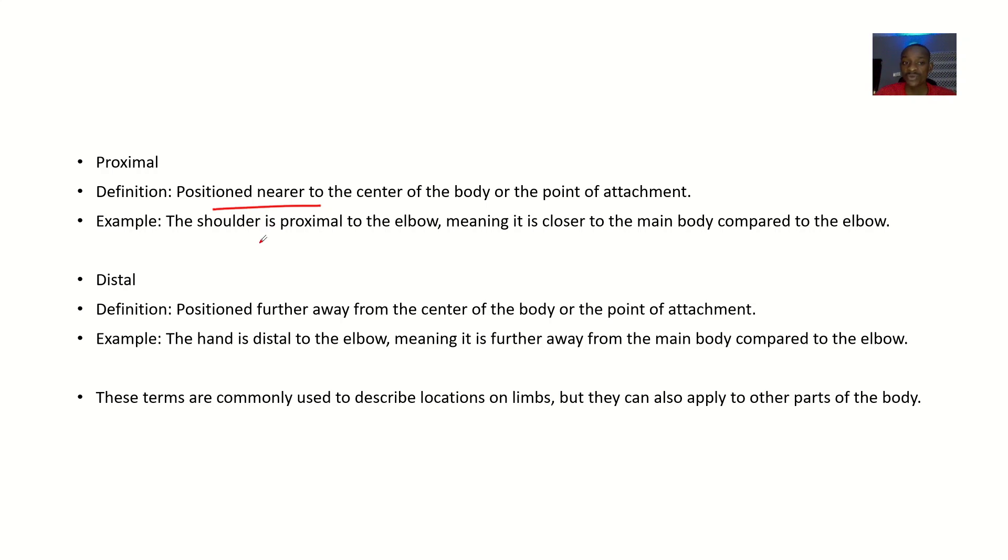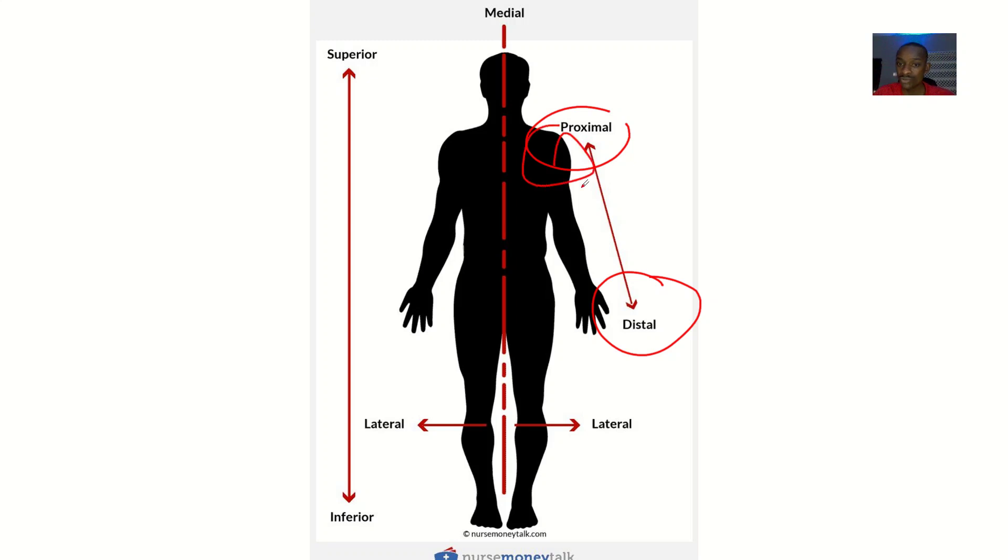Example is what? The shoulder is proximal to the elbow, meaning it is closer to the main body than the elbow. The shoulder is closer to you than this elbow joint.